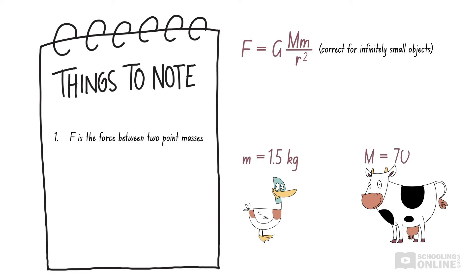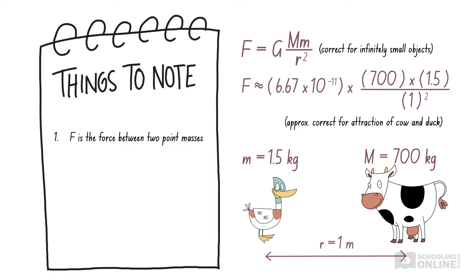However, we can still substitute their masses and the distance between them into the equation, to find an answer which is approximately correct. In other words, we can still use this equation if we pretend the mass of the entire object is concentrated at its centre, and we measure the distance between the centres of the two objects.